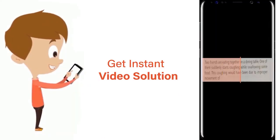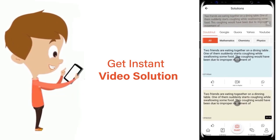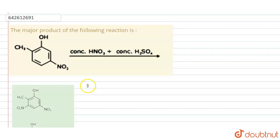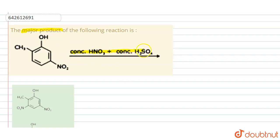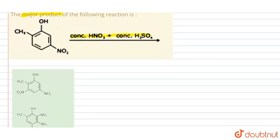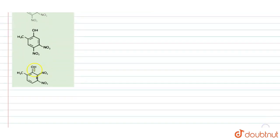The question says: find the major product of the following reaction. The reactant is reacting with concentrated HNO₃ plus concentrated H₂SO₄. We have to find the major product of this reaction.